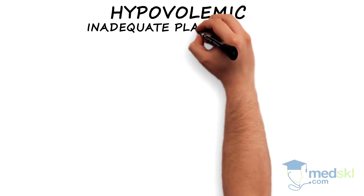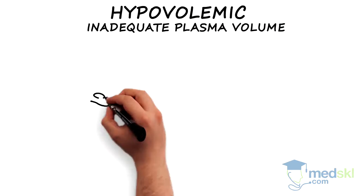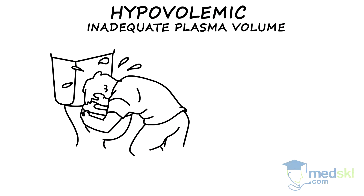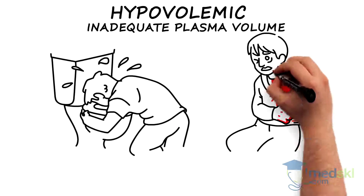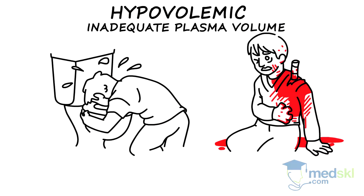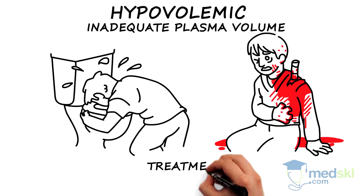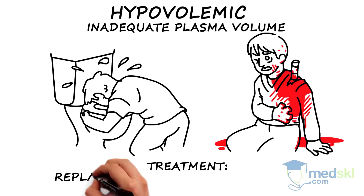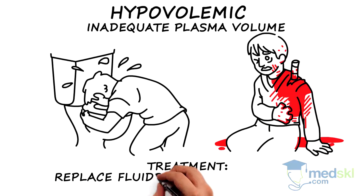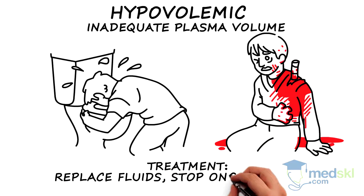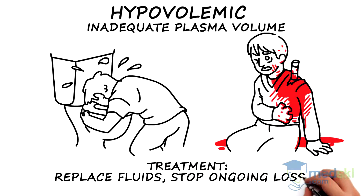Hypovolemic shock results from inadequate plasma volume, often due to dehydration or blood loss. Treatment involves replacement of the fluids lost, including blood, and stopping any ongoing fluid loss or bleeding, which could require urgent surgery.